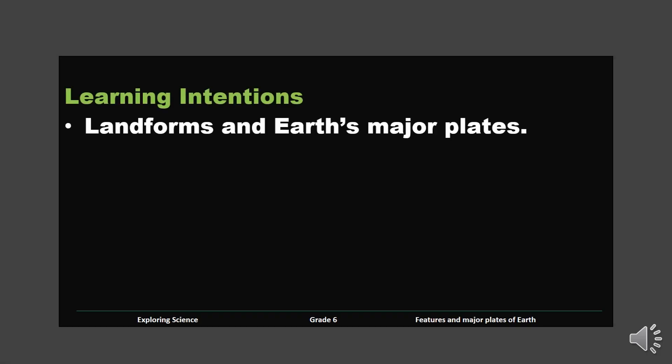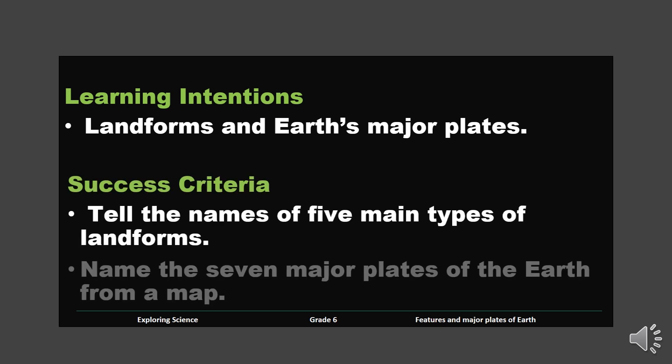Learning Intentions. In today's lesson, you are going to learn about landforms and Earth's major plates. Success Criteria: by the end of the lesson, you will be successful if you can tell the names of five main types of landforms and name the seven major plates of the Earth from a map.